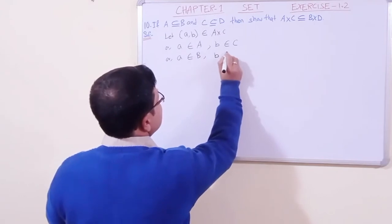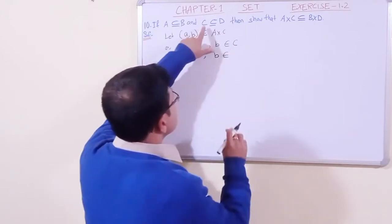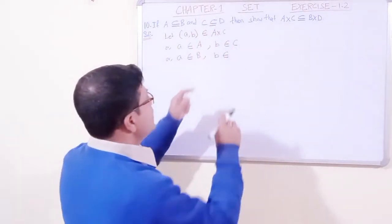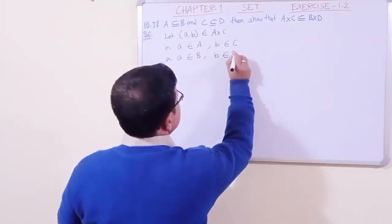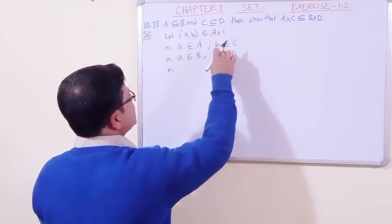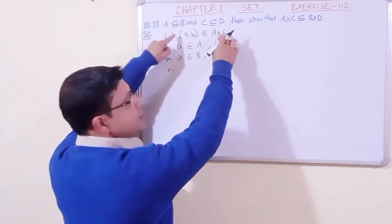this b belongs to C. C is a subset of D, that means b belongs to D. If you combine these two...